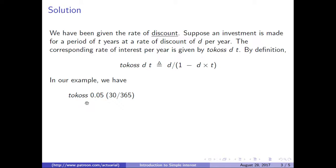In our example we have tokos of 0.05 and 30/365. Using the definition of tokos, we get 0.05 over 1 minus 0.05 times 30/365.